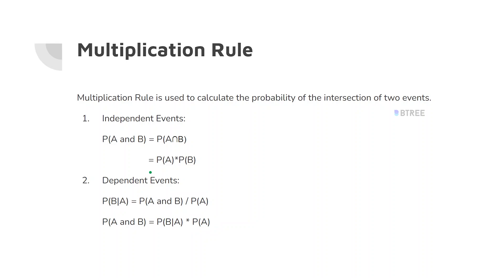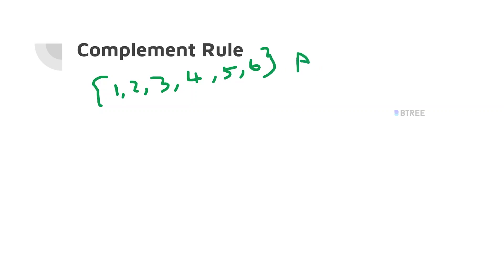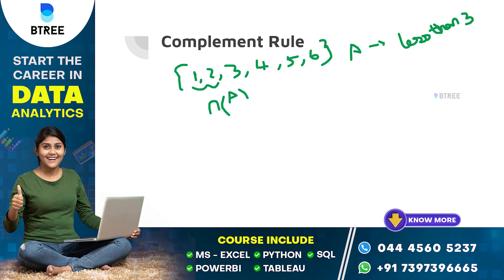The second rule is the Complement Rule. For example, if we roll a dice, the sample space is {1, 2, 3, 4, 5, 6}. Let Event A be the outcome less than 3, so the outcomes are {1, 2}. The complement is all outcomes that are not less than 3.